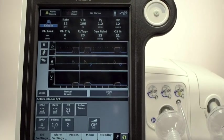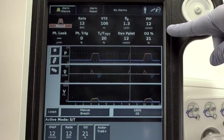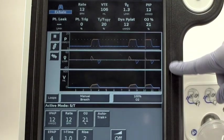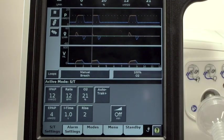The screen is laid out with a ventilator status bar at the top. Moving down the screen, we see the patient data window, the graphic monitoring window, and the settings window with tabs for ventilator settings, alarm settings, ventilator mode, a menu of additional features, and standby.